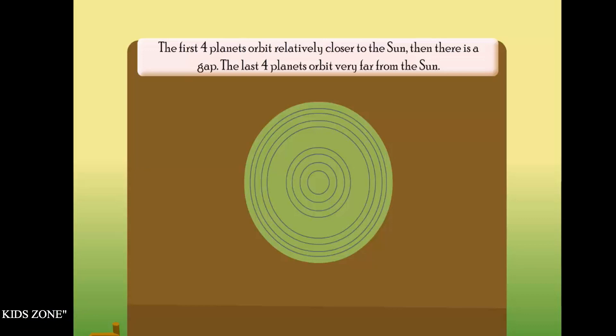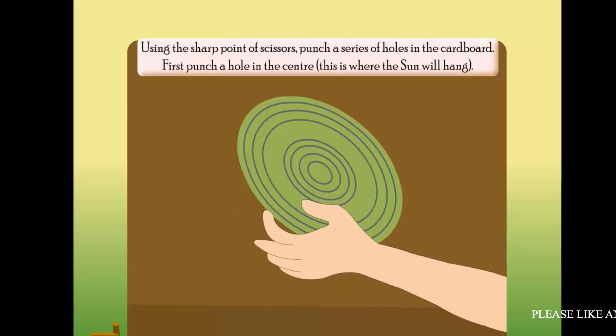The last four planets orbit very far from the Sun. Using the sharp point of scissors, punch a series of holes in the cardboard.